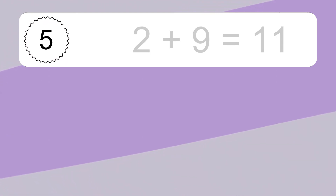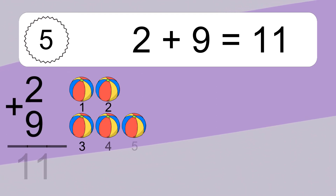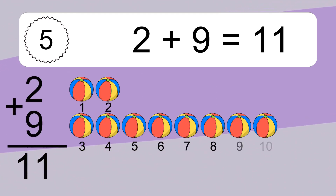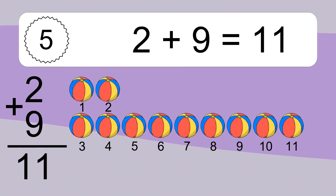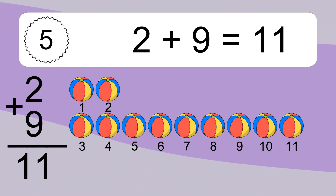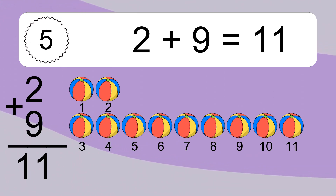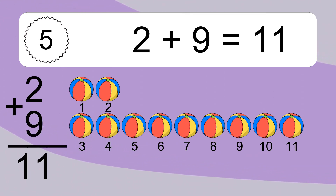2 plus 9 equals what? Let's count it: 1, 2, 3, 4, 5, 6, 7, 8, 9, 10, 11.